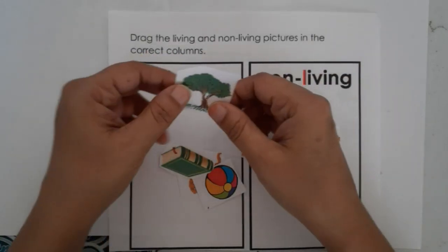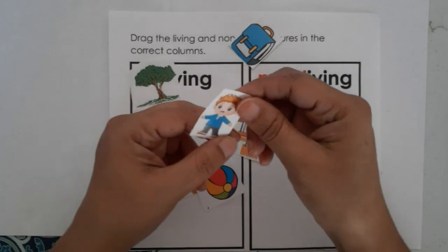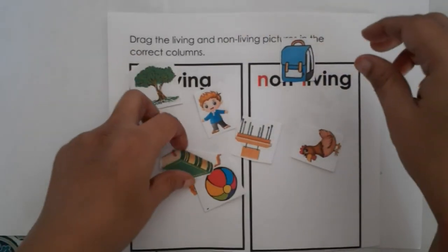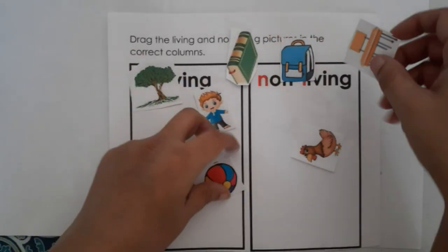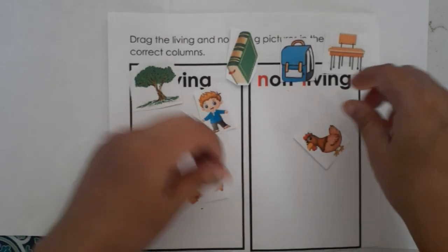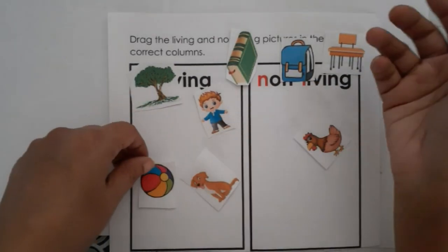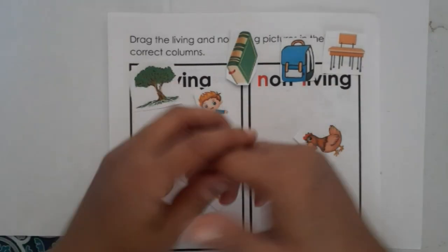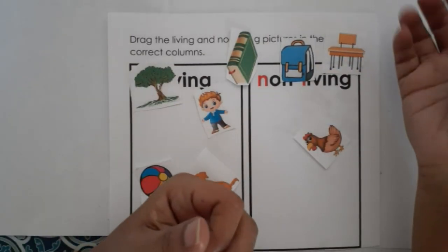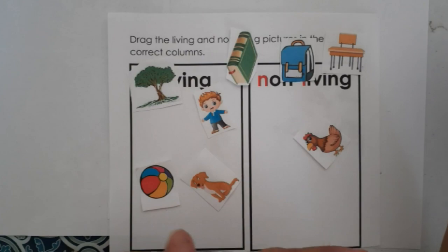Living things can move from one place to another, while non-living things cannot. We'll explore these concepts using activities designed for young children. These activities help them understand which things can reproduce, grow, and move.